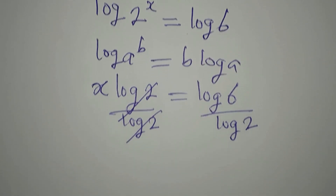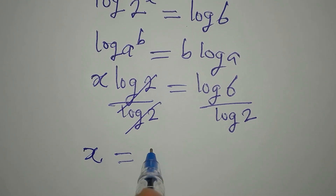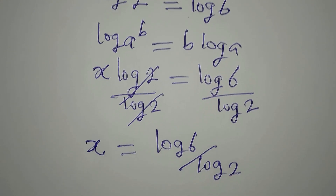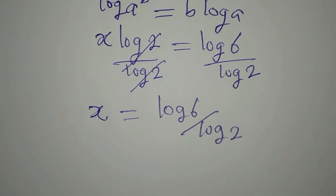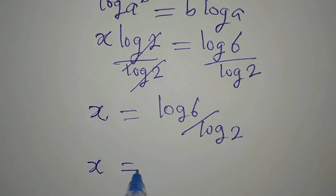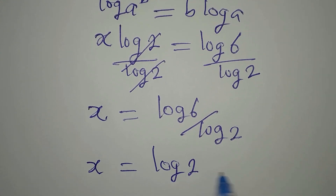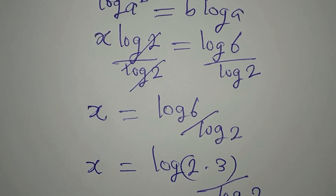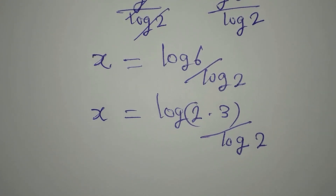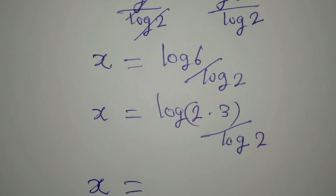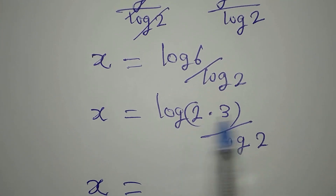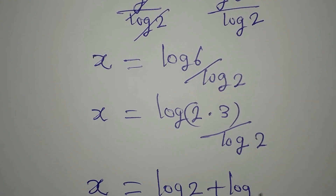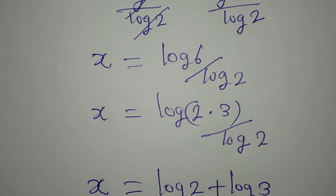This gives us x equals log 6 divided by log 2. We can simplify this because 2 is a factor of 6 — we write log 6 as log(2 times 3), then divide by log 2. Since log of a product is the sum of logs, we have log 2 plus log 3, all over log 2.